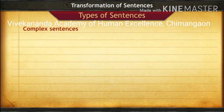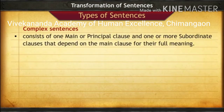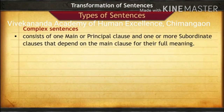Next, we will see the third type of sentence — the complex sentence. As the name suggests, it is a little bit complex. It consists of one main or principal clause and one or more subordinate clauses that depend on the main clause for their full meaning. The subordinate clause needs the main clause to complete its meaning.